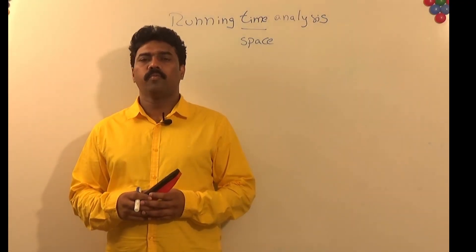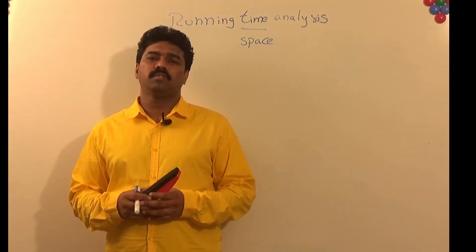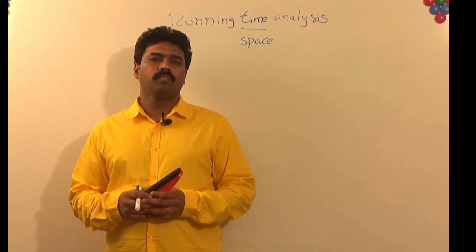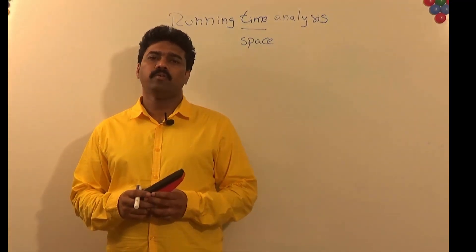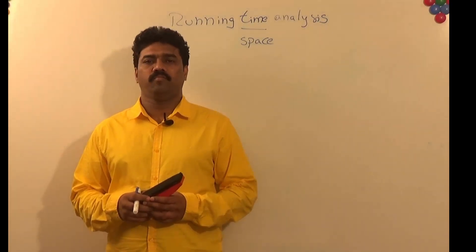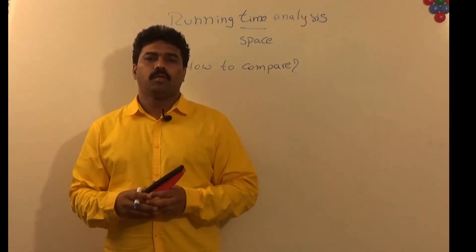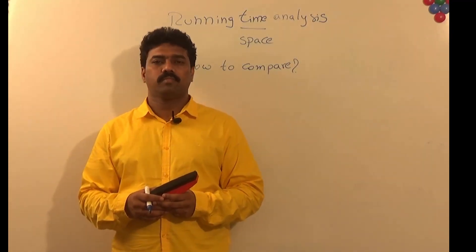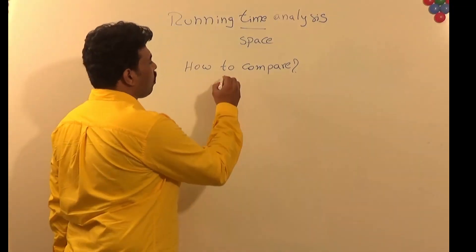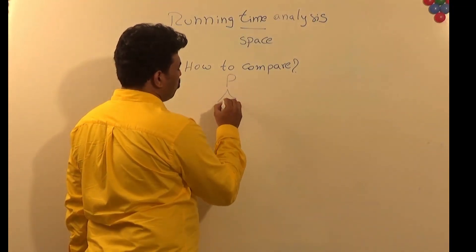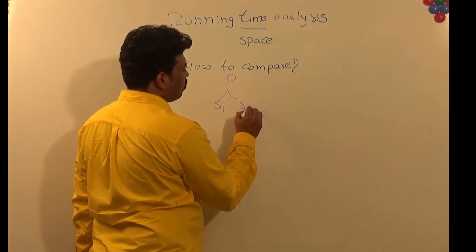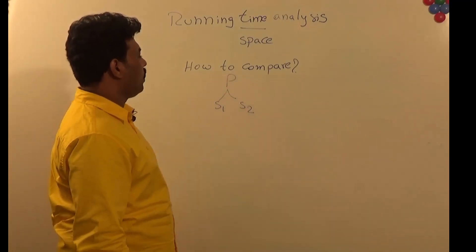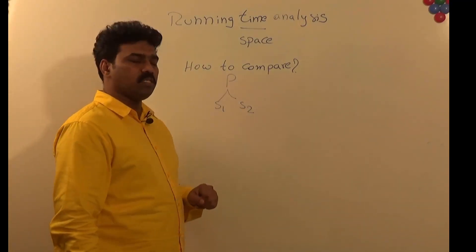In the previous sessions we understood that an algorithm is nothing but a set of instructions for solving the given problem. Also, if you have multiple solutions for the same problem, you need to analyze them and select the efficient one. Let us assume the given problem is P and we have two solutions S1 and S2, which both solve the same problem P.